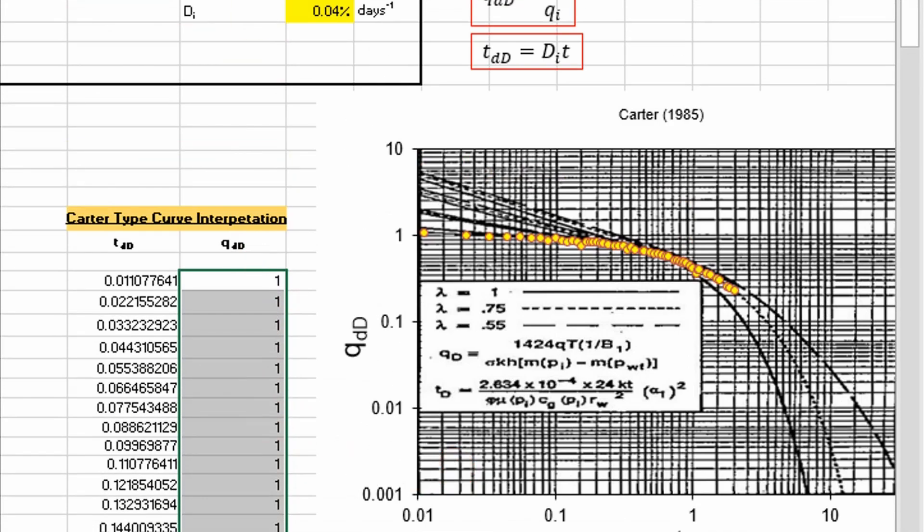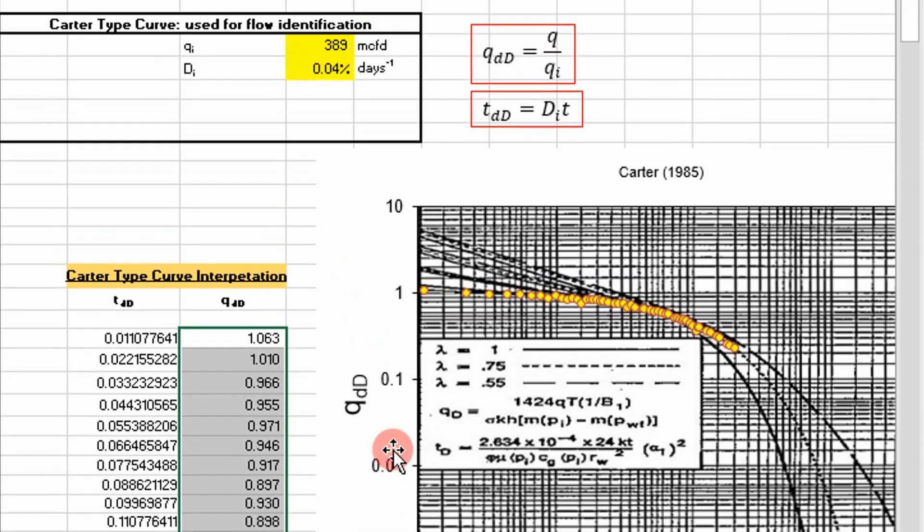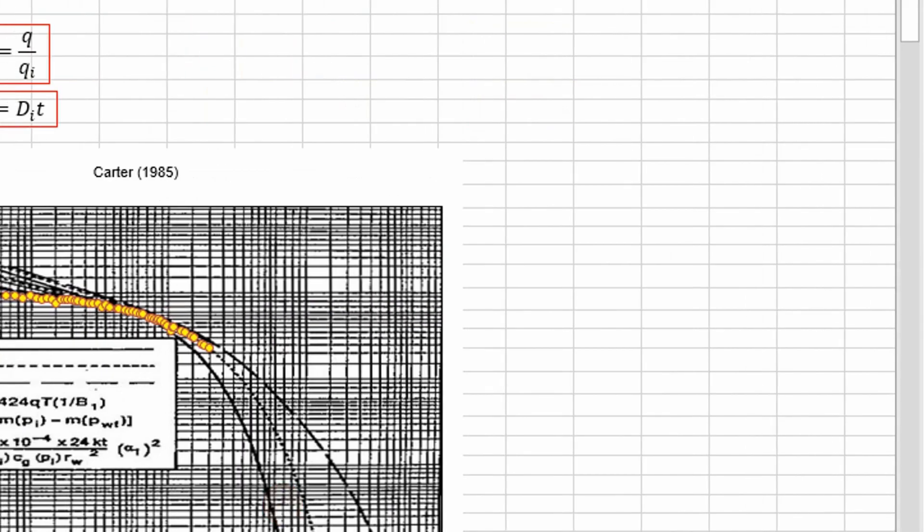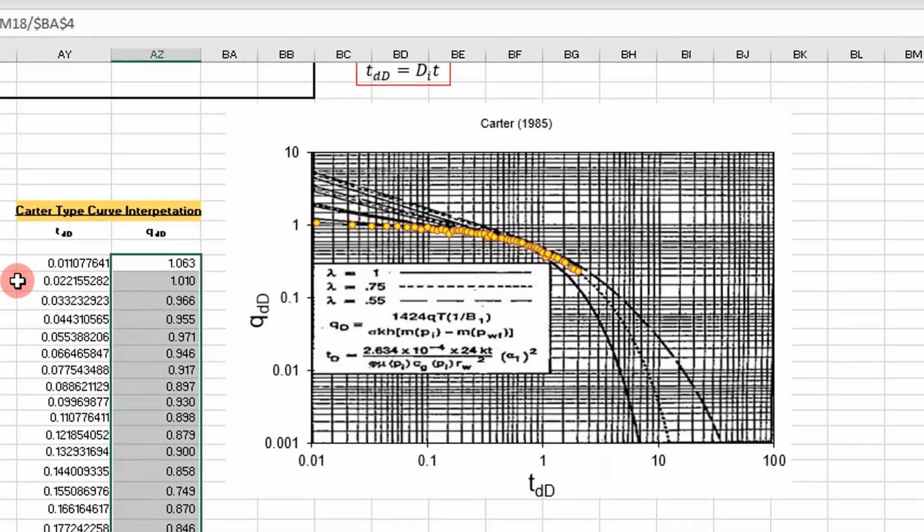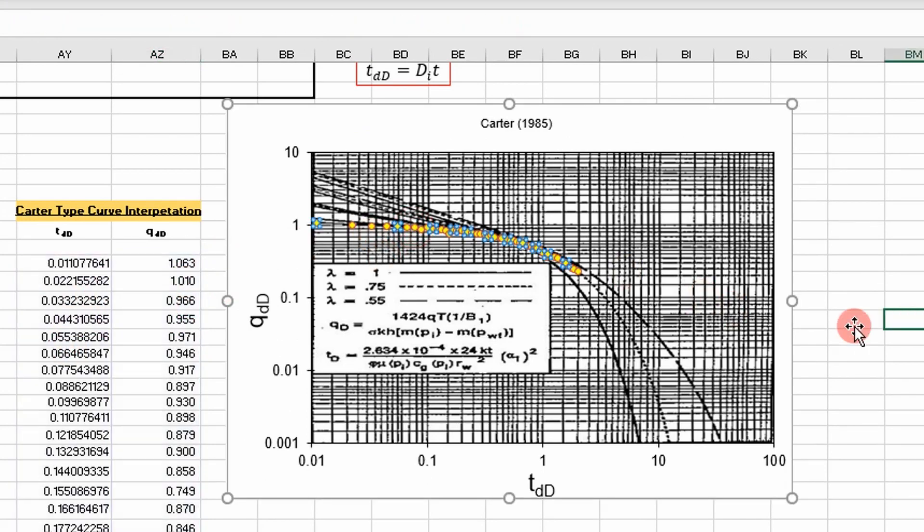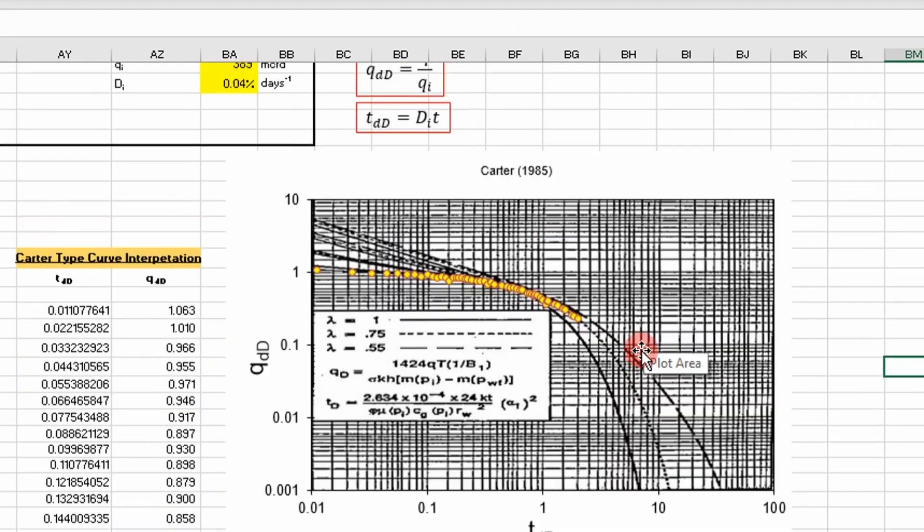Okay, so that's our dimensionless time and our dimensionless rate for each of our data points. And I went ahead and plotted these values on our Carter type curve. And look at this. So you can see our data points on the Carter type curve.